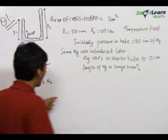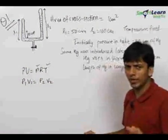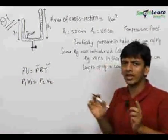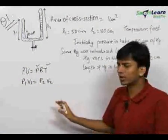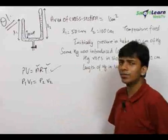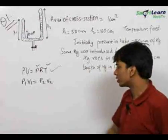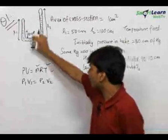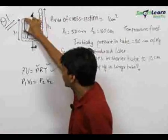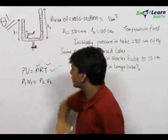We need not remember all these laws separately — you may remember the names, but everything can be solved by using PV equals NRT. So we apply P1V1 equals P2V2 for the volume of gas which was in this tube initially.